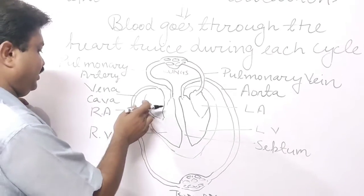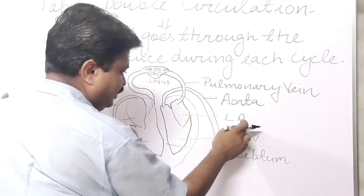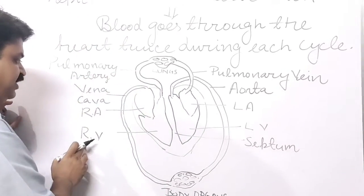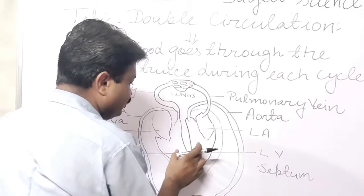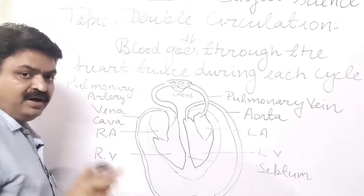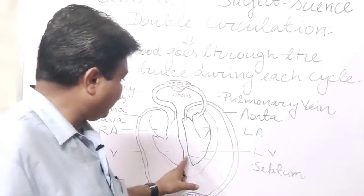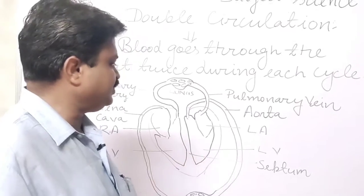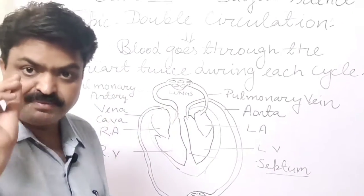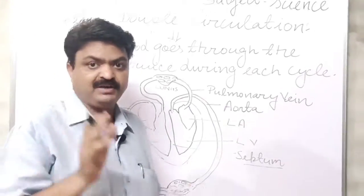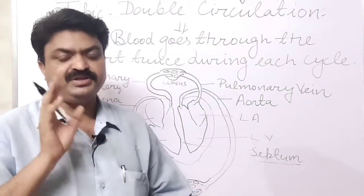The four chambers are: first, right atrium; second, left atrium; third, right ventricle; fourth, left ventricle. These chambers are separated from each other by the septum. Septum is a thick muscular wall that separates the chambers from each other.